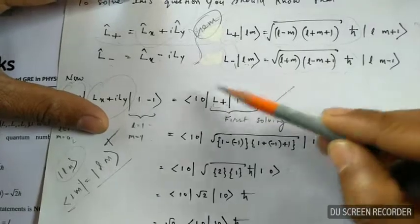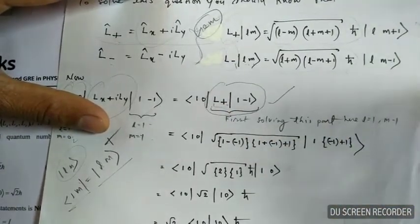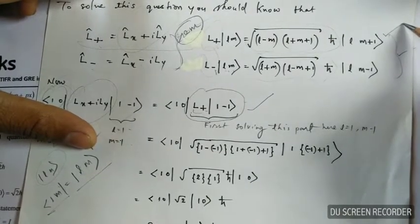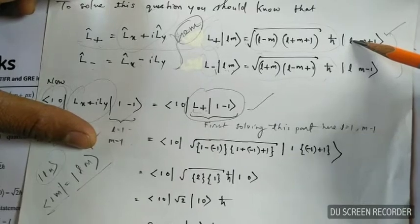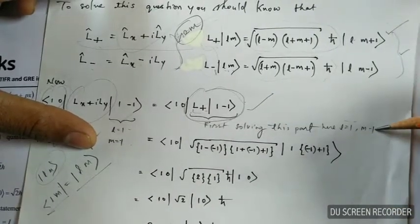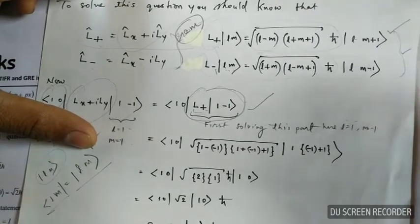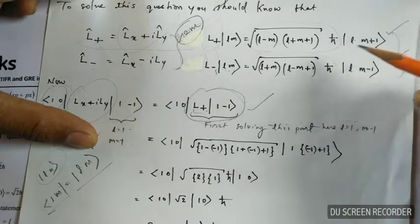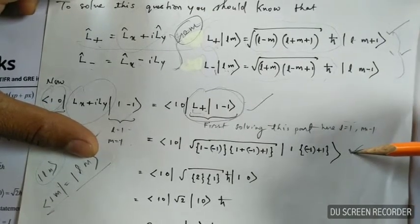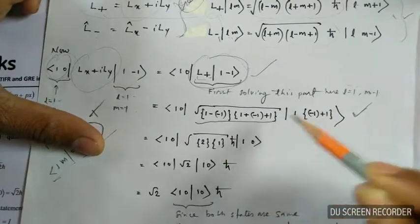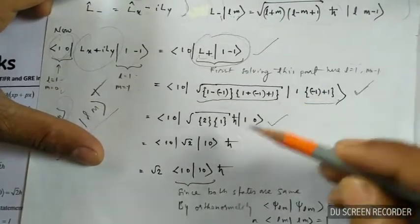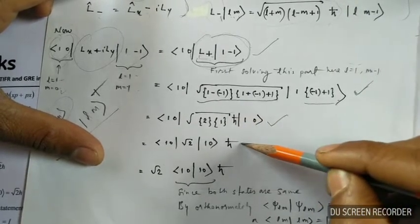Now let's first solve this part. This part is solved with the help of the eigenvalue equation — I have applied the equation and plugged in the proper values. For this part, l equals 1 and m equals minus 1. I have plugged the values into this equation and simplified both parts. Since h₀ is a constant, I have taken it out of the expectation.